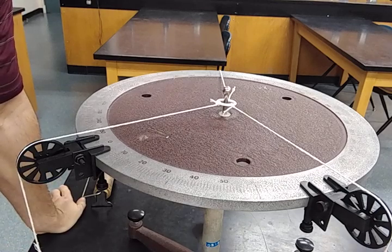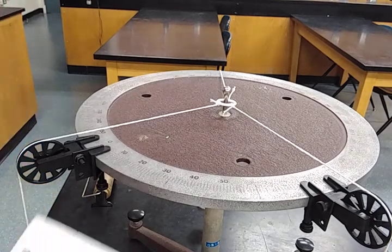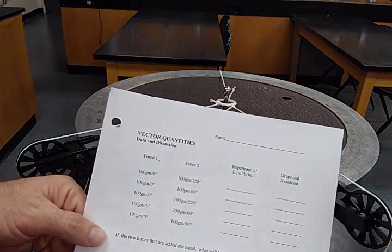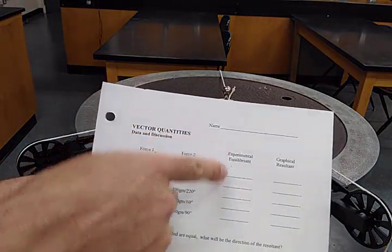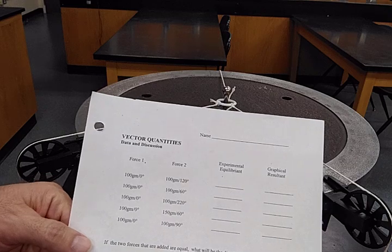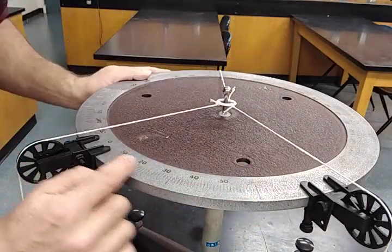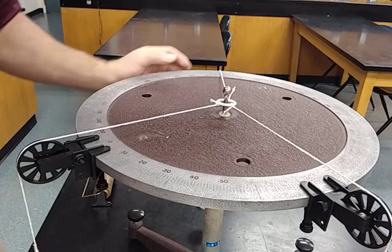All right, here's our setup for the first part of the experiment. If we take a look at our data table, we're going to be determining what's called the experimental equilibriant. We've got this round table with some angle markings, which we'll be using.